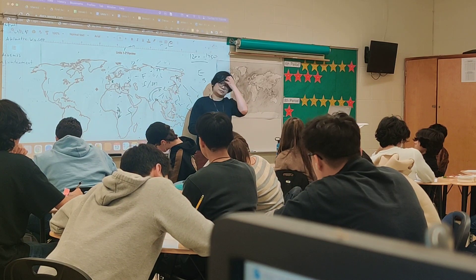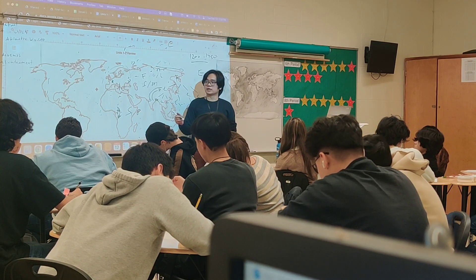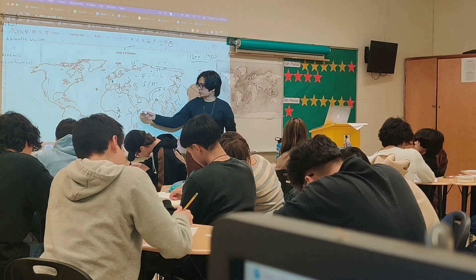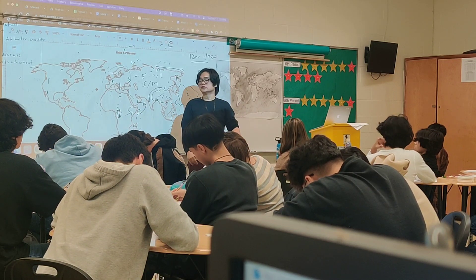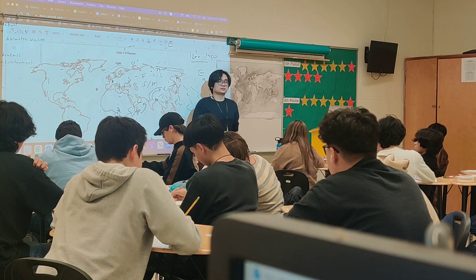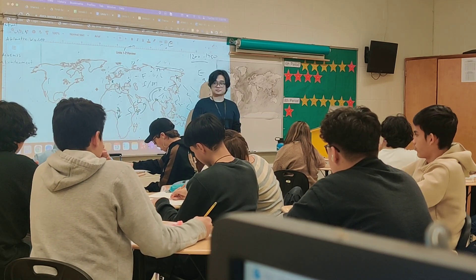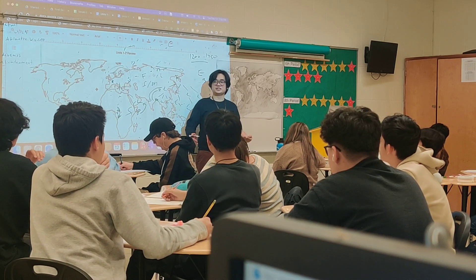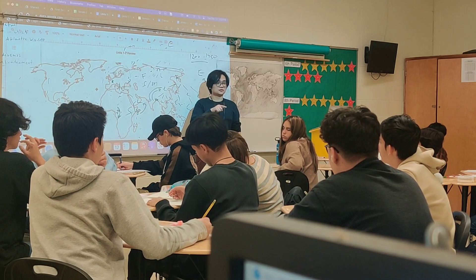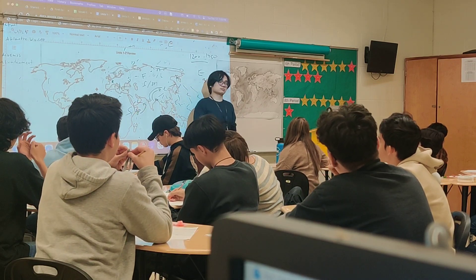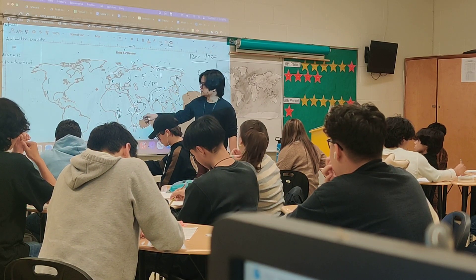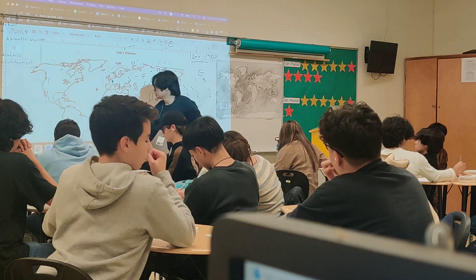Serfdom — peasants are tied to the land. Whoever owns the land, the peasants provide their labor for that lord. They work the fields and cultivate crops. The lord provides them with a place to live and protection — if someone attacks the land, the lord will defend it. The peasants cannot leave the land. That's the key difference: feudalism is about land ownership obligations between lords, while serfdom is about peasants being bound to the land.